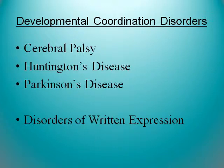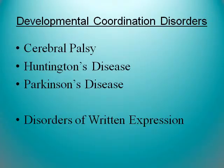Cerebral palsy is the best understood of the developmental coordination problems. We know specifically that 75 percent of cerebral palsy is of the spastic subtype, which is increased muscle tone and reflexes that impair mobility. There are different types: diplegia, where both legs are affected; quadriplegia, where all four limbs are affected; and hemiplegia, which affects one side or the other.